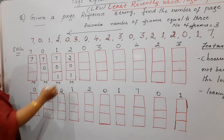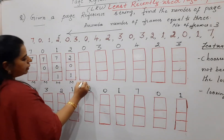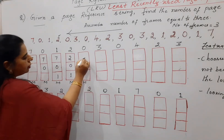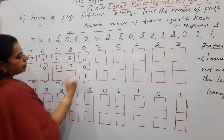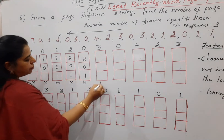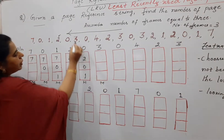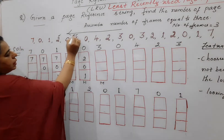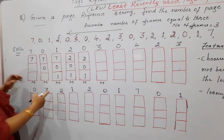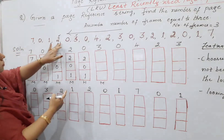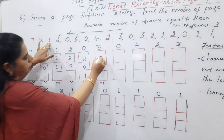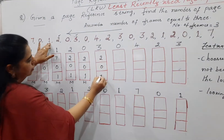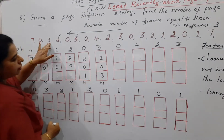Zero is already in memory — it is a hit. Three is not there, so it is a miss. Looking backward in the reference string at this point, out of two, zero, and one in the frames, one was used long ago, so you replace one with three.